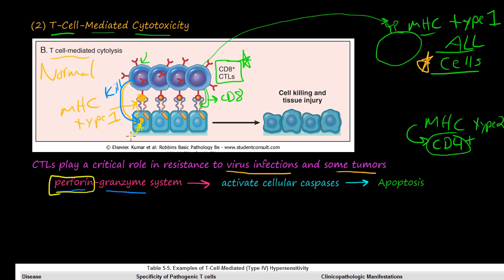The granzymes go inside the cells and activate cellular caspases. These molecules then trigger apoptosis — programmed cell death. As we discussed in earlier videos, apoptosis is non-inflammatory; it is a programmed, organized cell death. So the CD8 plus cells kill each individual cell that presents an abnormal, non-self molecule on MHC type 1, resulting in tissue injury and cell death.